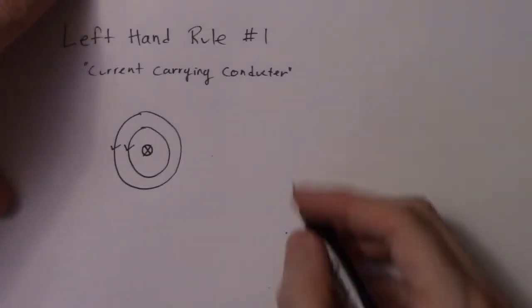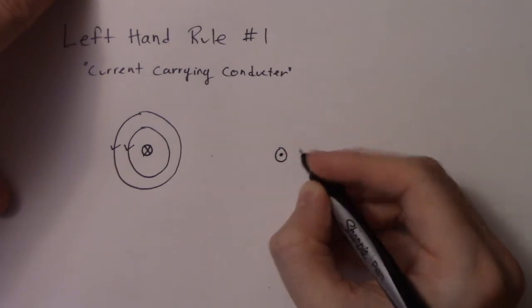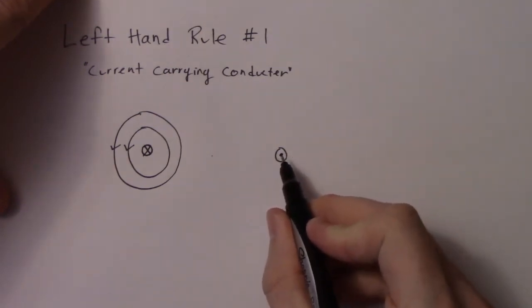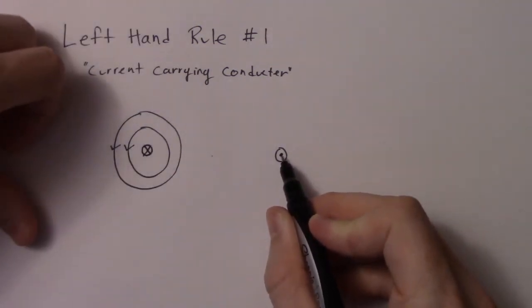Now in the opposite scenario, where the current is coming straight at you, instead of the crosshairs, you have the point of the arrow. Picture it as it's being shot at you, right between your two eyes, and all you can see is that point.